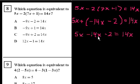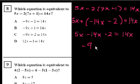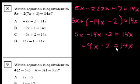So we have 5x minus 14x. What's 5 minus 14? It's minus 9. So minus 9x minus 2 is equal to 14x. And that is choice A.